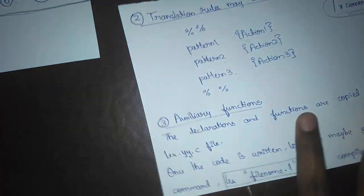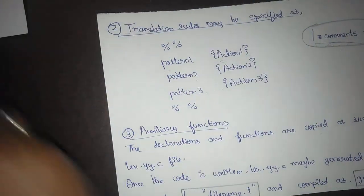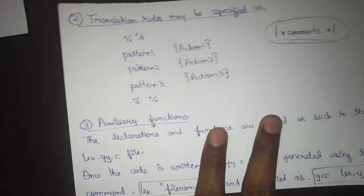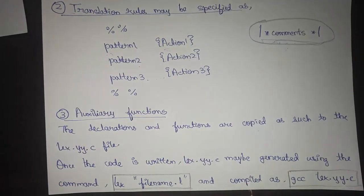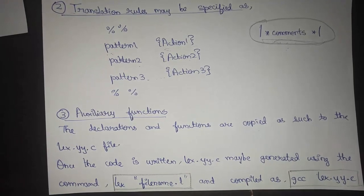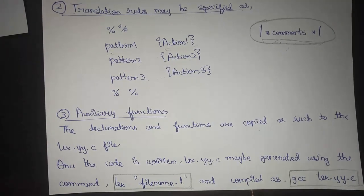In case of translation rules, whenever we have a pattern, it's very important to note that the pattern and action are separated using a blank space or a number of blank spaces. We can even use tab space in between them.